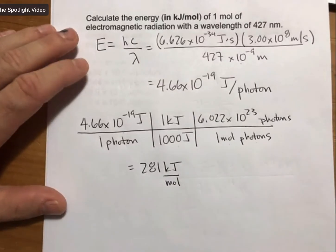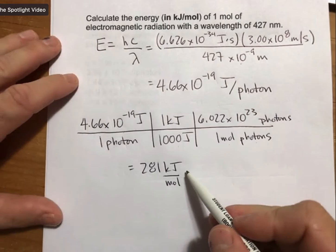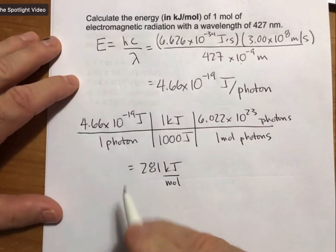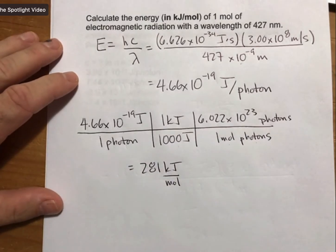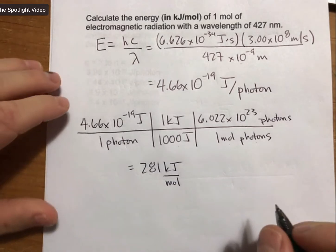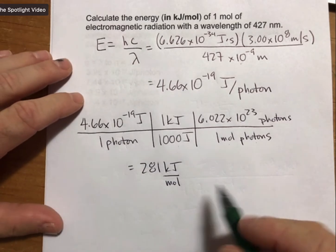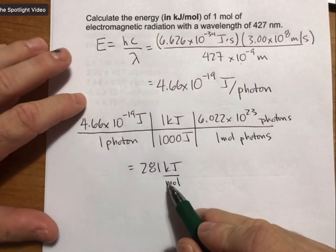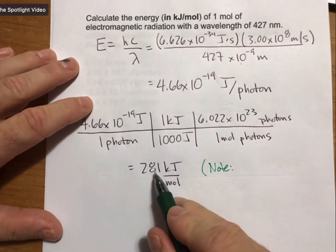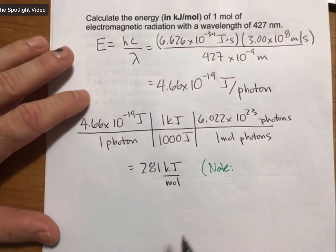And this is our first, perhaps, calculation that shows that the energy of one mole of photons is actually very similar to the energy for a mole or stored in a mole of covalent bonds. We haven't talked about that, but we have talked about the energies of reactions. And so I'll just make a little note here. So this energy is similar to the energies involved in chemical reactions.